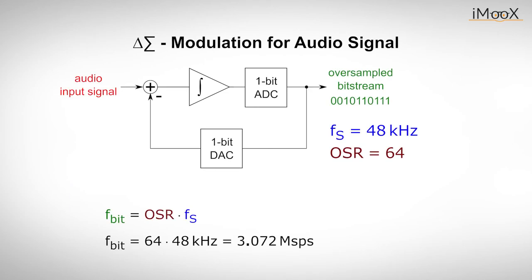For a practical example, we consider the oversampling ratio OSR to be 64, which means that for an audio signal with a typical Nyquist frequency of fs is 48 kHz, the output sampling rate fbit of the modulator would be around 3 megasamples per second. Now we filter the output of the modulator with a digital filter at the end of our signal chain.